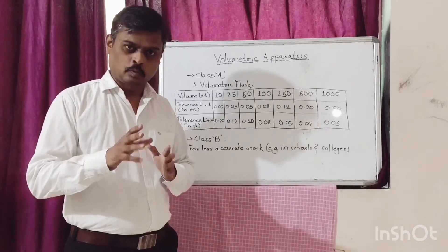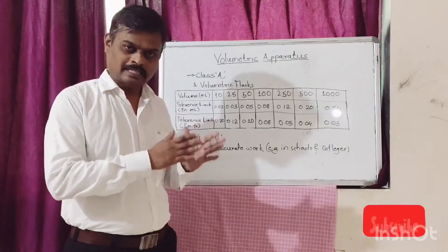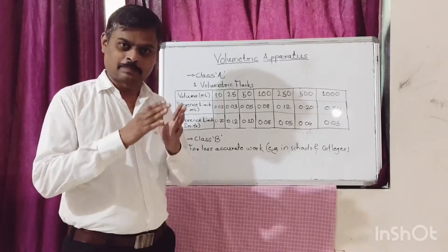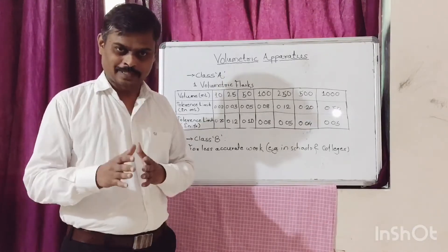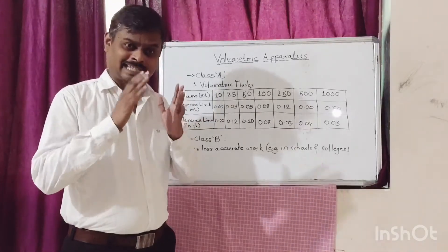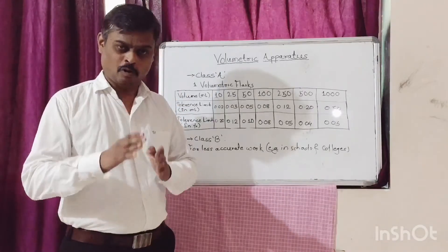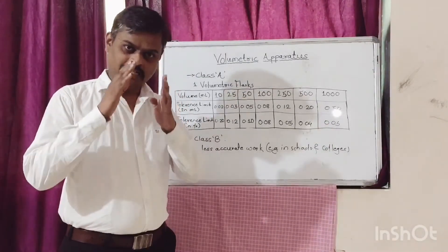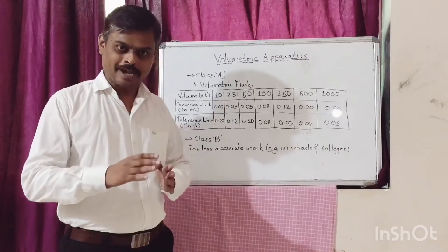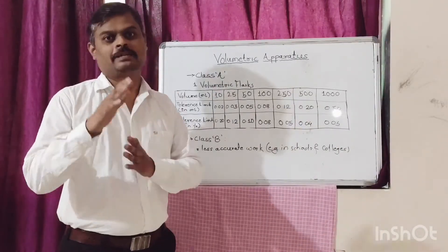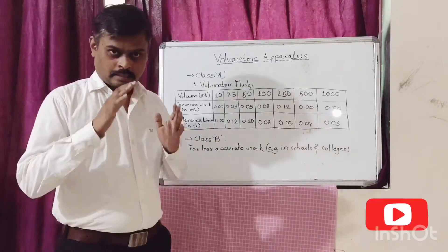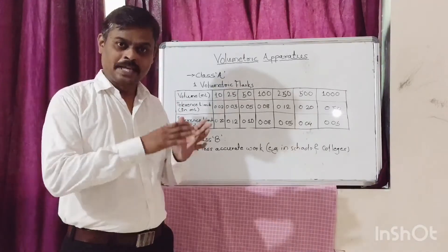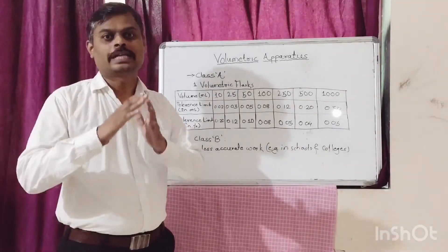There are 2 classes of volumetric apparatus: Class A and Class B. Unless otherwise specified in individual monograph or specification, Class A glassware shall preferably be used for analysis. Class A glassware is recommended for analysis which requires the highest accuracy and precision. Class A glassware comes along with a calibration certificate bearing a unique serial number or traceability.